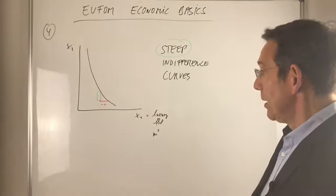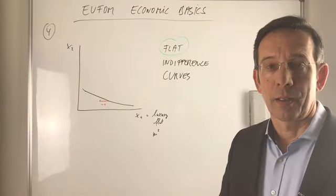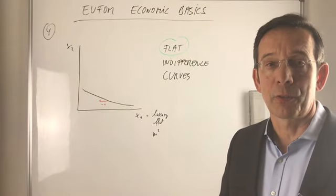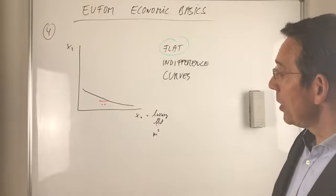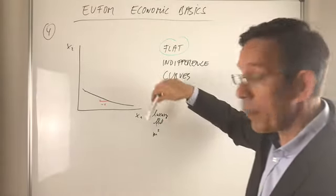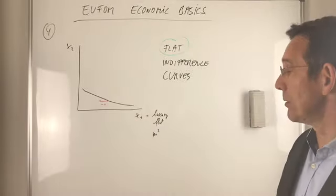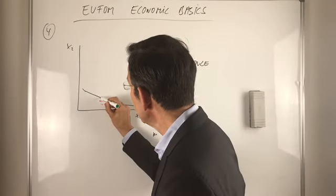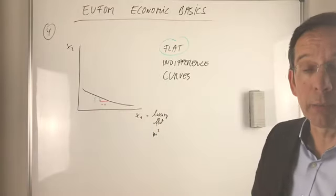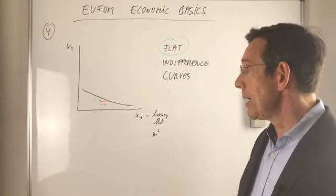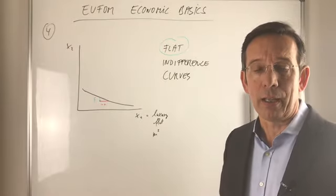Now let me do the same for flat indifference curves. If the indifference curve of one household is flat, what does that mean? You see it here, it's much flatter than before. If you take away one unit of the luxury flat, this household has to be compensated only by a little bit of x2, saying that this household does not have a real preference for luxury flats.